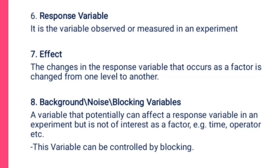The effect is the change in the response variable that occurs as a factor is changed from one level to another. Whenever you perform an experiment, the researcher's aim is to check whether the effects before are the same as the effects after. A blocking variable, background variable, or noise variable — they are the same — is a variable that potentially can affect a response variable in an experiment.